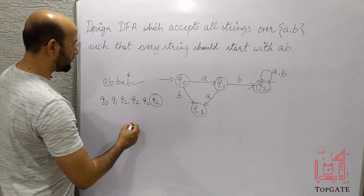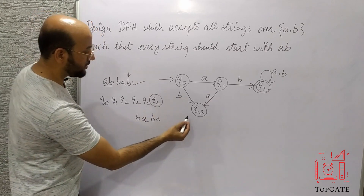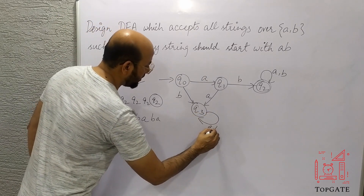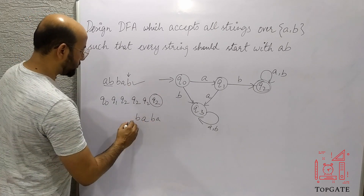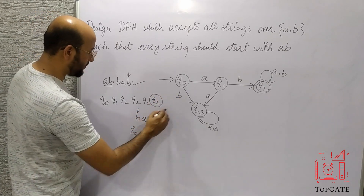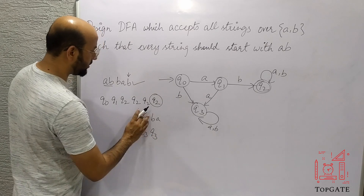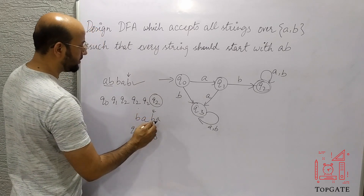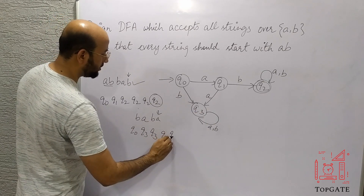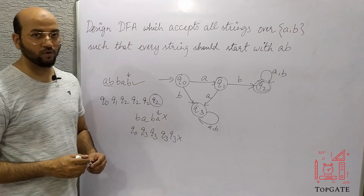Now let's test a wrong string: 'baba'. Starting at q0 — 'b' applied, go to q3 (dead state); 'a' applied, stay at q3; 'b' applied, stay at q3; 'a' applied, stay at q3. We end at q3 which is not a final state, so this string is correctly rejected by the DFA. Thank you so much.